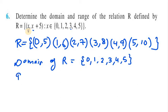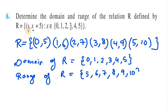Now we need to write the range of R. So range of R will be the second element of the ordered pairs. So it will be {5, 6, 7, 8, 9, 10}.